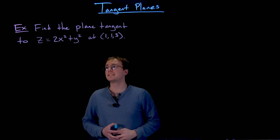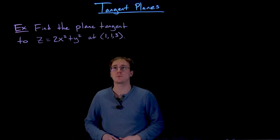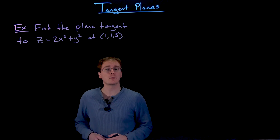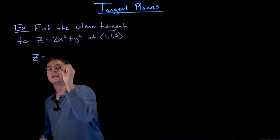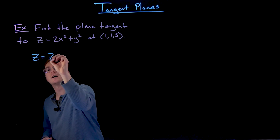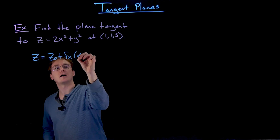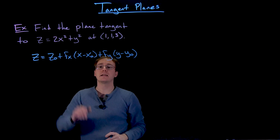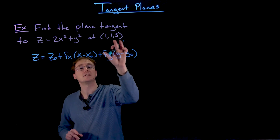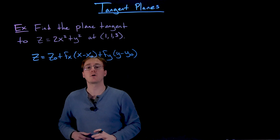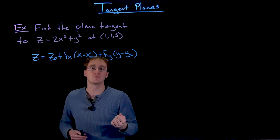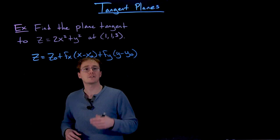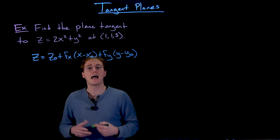In this example, we are asked to find the plane tangent to the surface z equals 2x squared plus y squared at the point where x equals 1, y equals 1, and z equals 3. The first thing we need is the general equation for our tangent plane: z equals z-naught plus f-sub-x times x minus x-naught plus f-sub-y times y minus y-naught. Here z-naught is the value of our function at the point of interest, which is 3, and f-sub-x and f-sub-y are the first partial derivatives evaluated at x and y equal to 1.